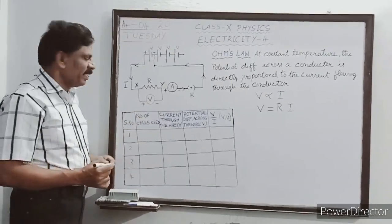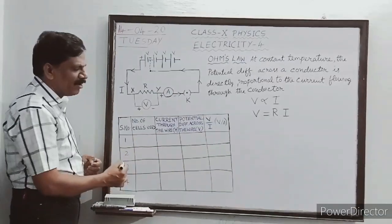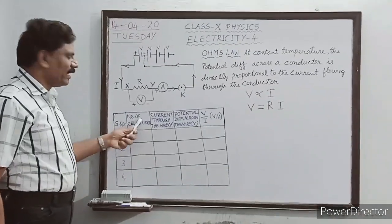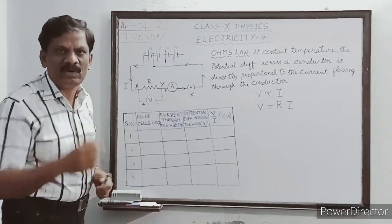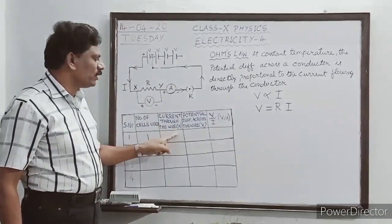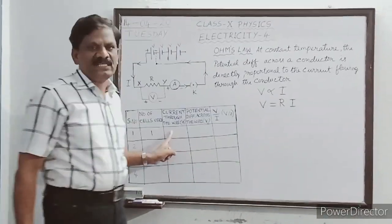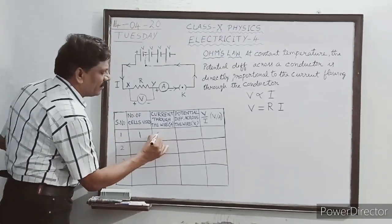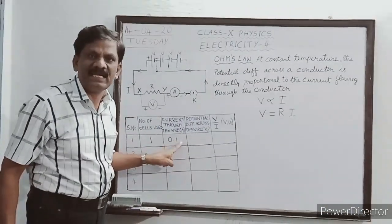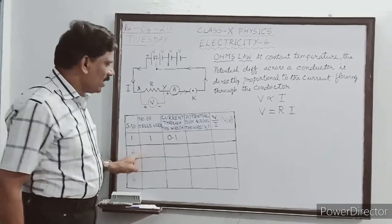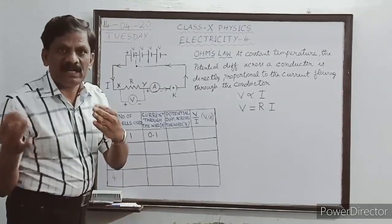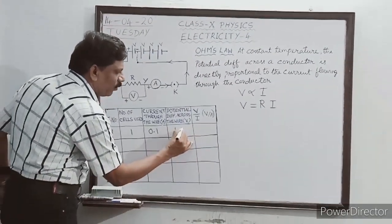I will record the results in a tabular column. The first column is the number of cells used — in this case, one. The second column is the current flowing through the wire, measured by the ammeter. For example, let us say the current is 0.1 ampere. The voltmeter reading gives the potential difference across the ends X and Y of the resistance — for example, 1.5 volt.